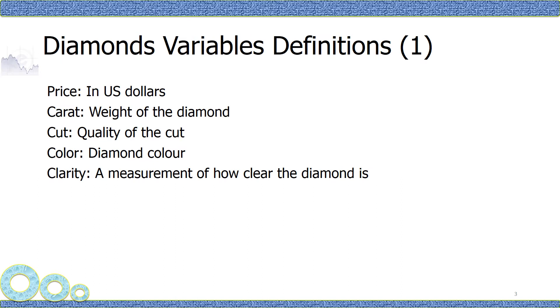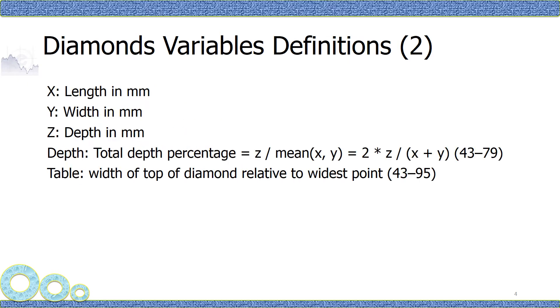The five most important variables are price, carat, cut, color, and clarity. There are five other variables, but I'm not going to analyze them.